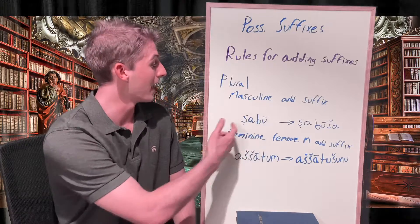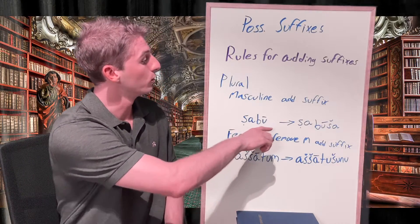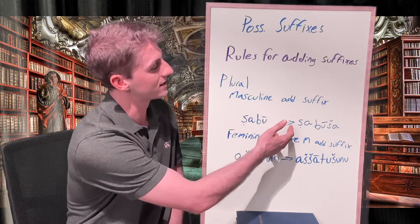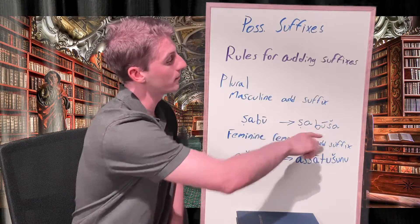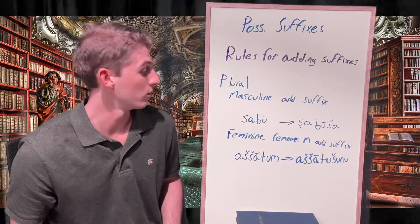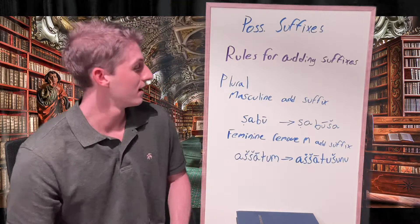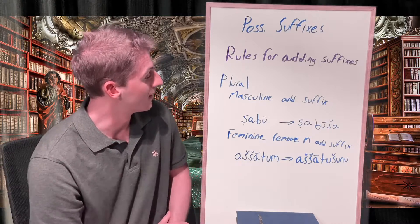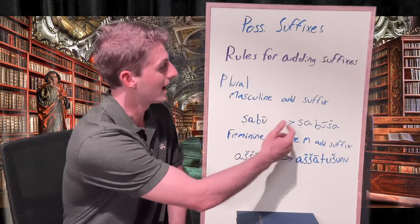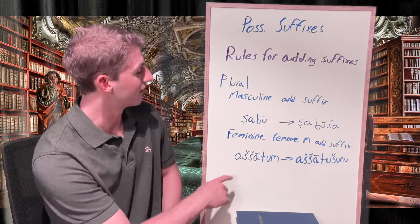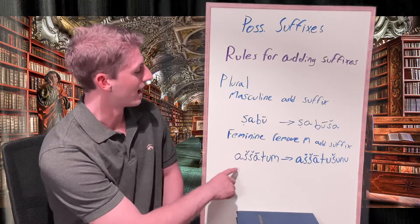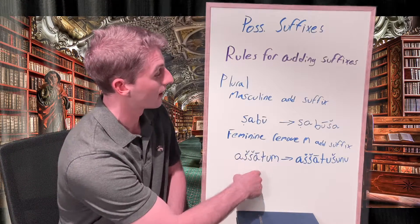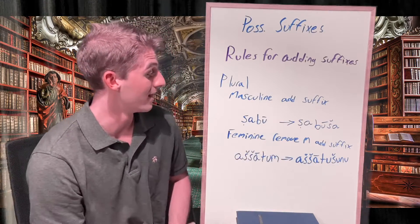For plural masculine nouns, the suffix is added directly to the end with no change. Here we have 'ṣābū' meaning 'soldiers,' where the long 'u' denotes a plural nominative ending. The suffix is added to get 'ṣābūša,' meaning 'her soldiers.' This applies to all case endings, so with 'ṣābī' in the genitive or accusative, the long 'i' remains when the suffix is added. For plural feminine nouns, the 'im' memation is removed and the suffix is added — similar to singular genitive nouns. So 'aššātum' meaning 'wives' in the nominative plural loses its 'm' to give 'aššātušunu,' meaning 'their wives' with a masculine subject.